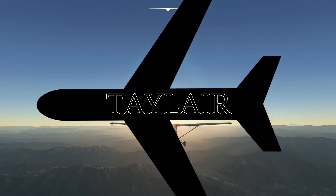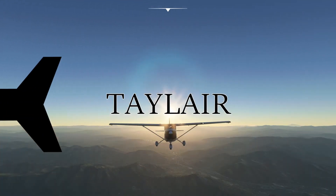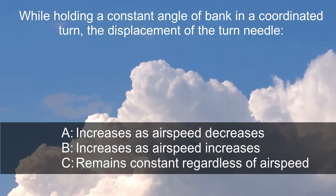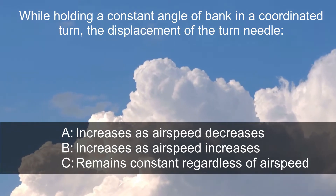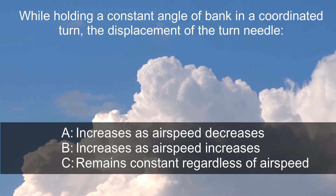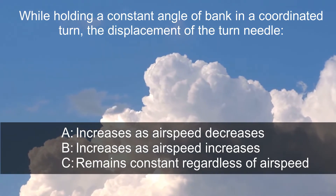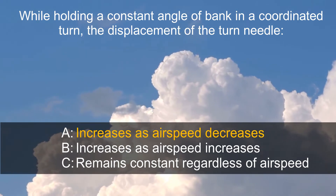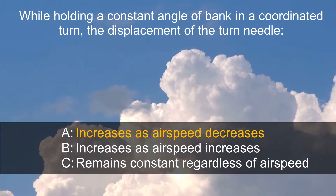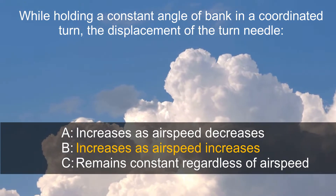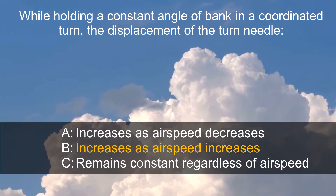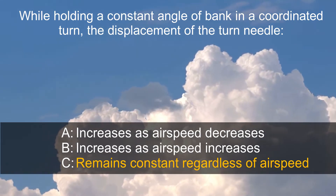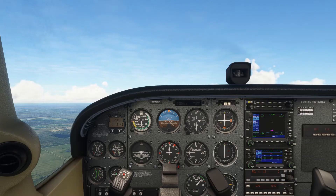Welcome back to Tail Air, it's time for another Theory Quickie. Here's a question from the FAA database: while holding a constant angle of bank in a coordinated turn, the displacement of the turn needle increases as the airspeed decreases, increases as the airspeed increases, or remains constant regardless of airspeed?